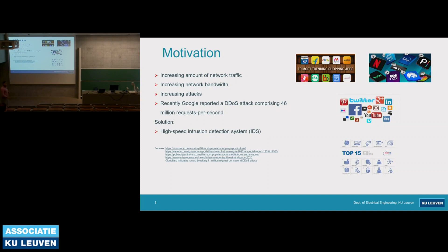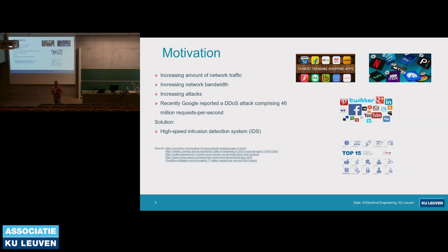The amount of internet traffic has ever been increasing. More and more people are using 4K video streaming services and online shopping. Even while I'm talking to you, about 20 to 25 terabytes of data has been generated. This has put increased pressure on internet service providers, and they are finding new solutions, increasing the speed and bandwidth of high-speed ethernet solutions, even striving to achieve 3.2 terabytes per second by the year 2030. With the growth of the online world, cyber criminal activities have also seen a sharp rise. Recently, Google reported a distributed denial of service attack comprising 46 million packets per second.